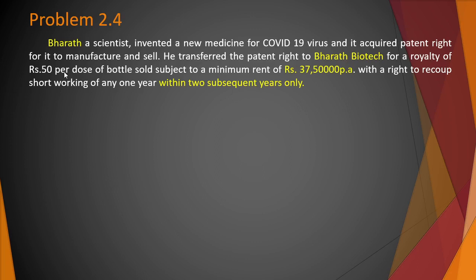Let me narrate the story here. Bharat is a scientist who invented a new medicine for COVID-19 virus and acquired patent rights for manufacturing it. He transferred the patent right to Bharat Biotech for a royalty of Rs. 50 per dose of bottle sold, subject to a minimum rent of Rs. 37,40,000 per annum.